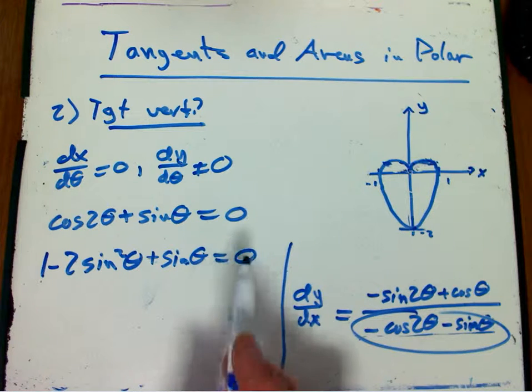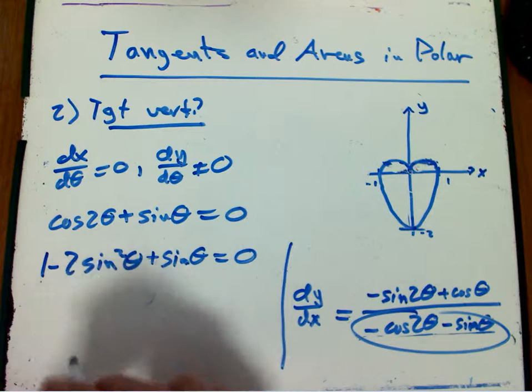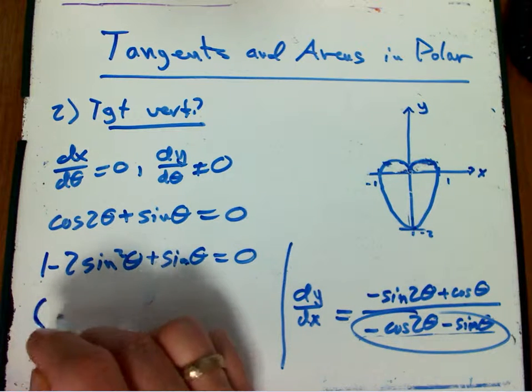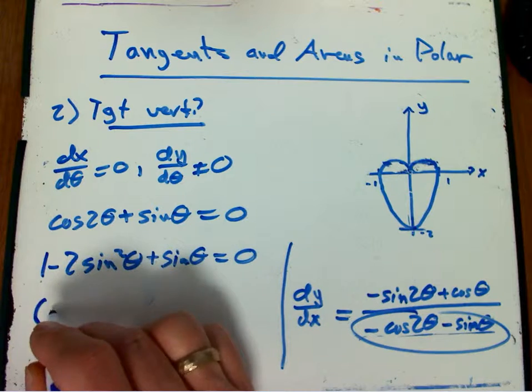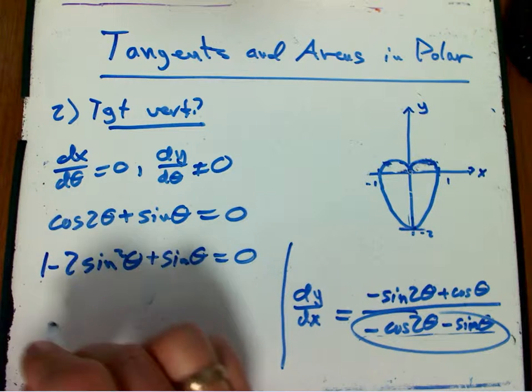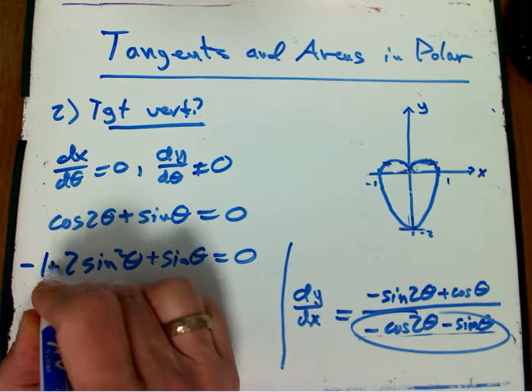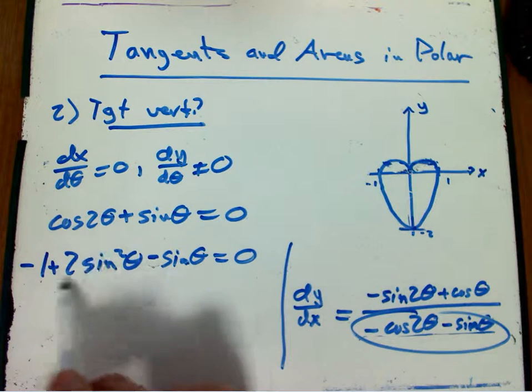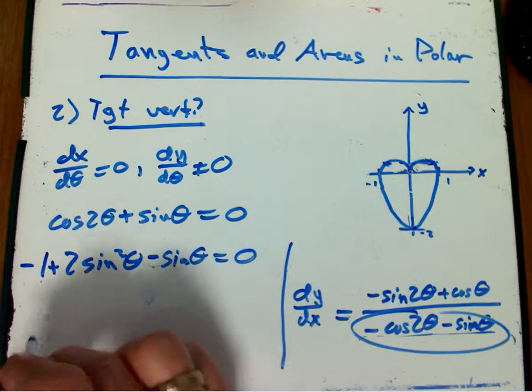Now that's a quadratic in sine theta. Okay, so in fact, it's going, and it factors, that's pretty lucky for us that it does. Let's actually flip the signs, because I find it to be particularly confusing when the leading coefficient in front of the quadratic is negative.